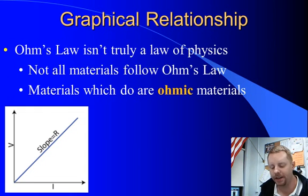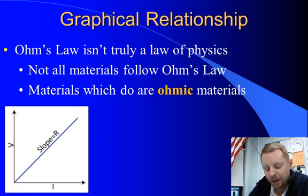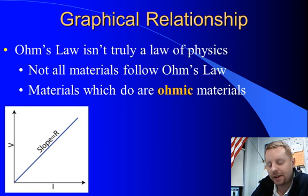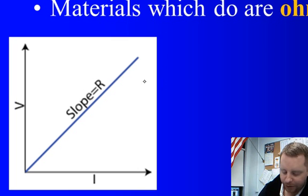Now, important to keep in mind is that Ohm's law isn't truly a law of physics. It's an empirical relationship that holds for quite a few different materials. But not all materials obey Ohm's law in all circumstances. Materials which do obey Ohm's law are known as ohmic materials. And if something's ohmic, what you'll see is a graph when you plot current flow and voltage where you get a straight line. And the slope of that line, remember slope is going to be rise over run.